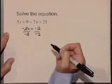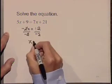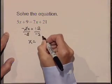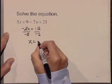The negative 2s cancel, leaving x on the left. On the right, 12 divided by negative 2 is negative 6. The solution set is negative 6.